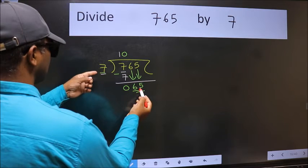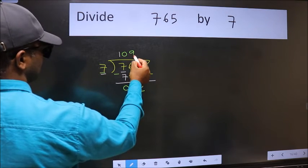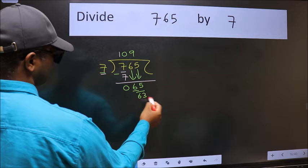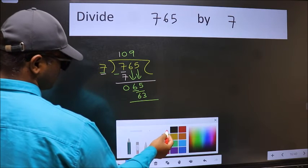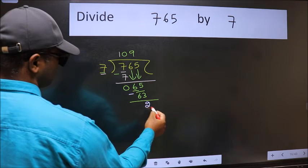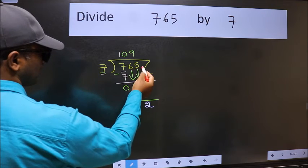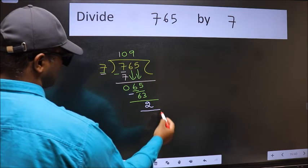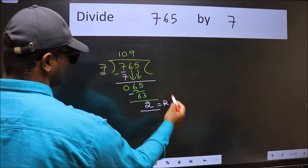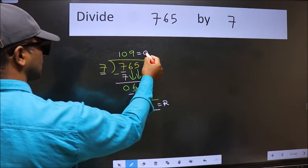A number close to 65 in the 7 table is 7 nines 63. Now we should subtract. We get 2. No more numbers to bring down, so we stop here. This is our remainder and this is our quotient.